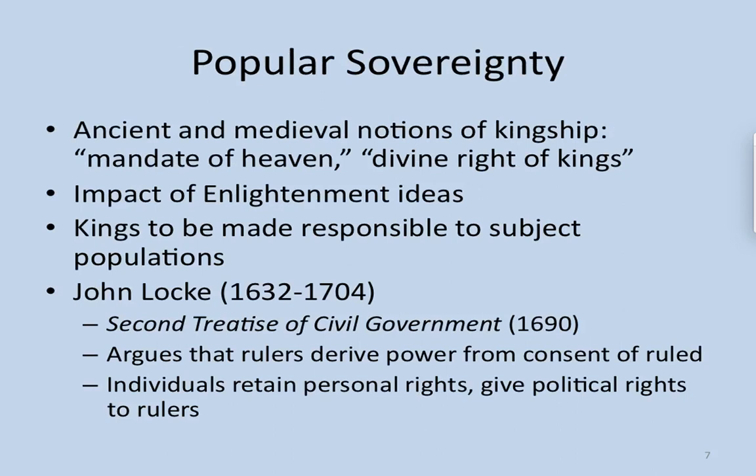The Enlightenment is going to challenge divine right. What is divine right? The monarchs are chosen by God — they have absolute authority. It's a great way to get away with anything: 'God chose me to rule, who are you to challenge God's authority?' So the Enlightenment challenges divine right with a new idea called popular sovereignty — the belief that the people hold the power and allow themselves to be governed.